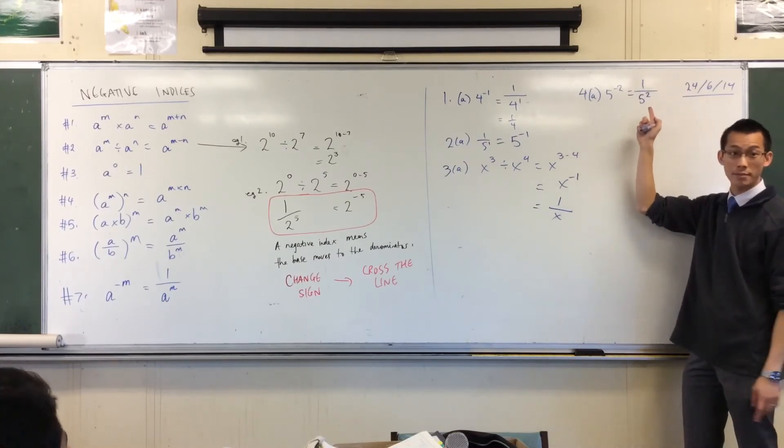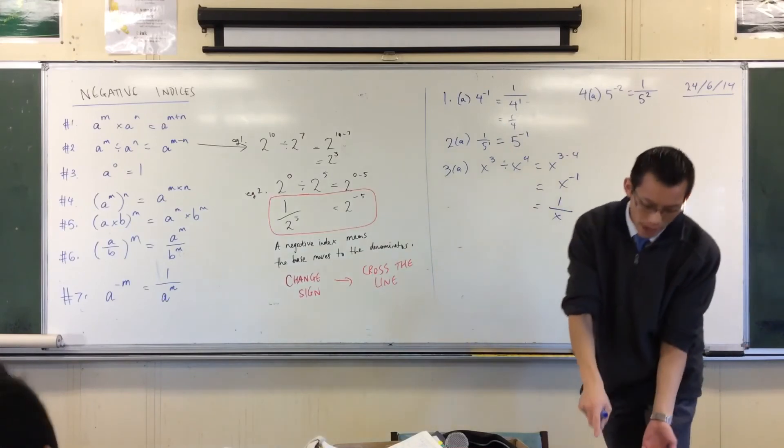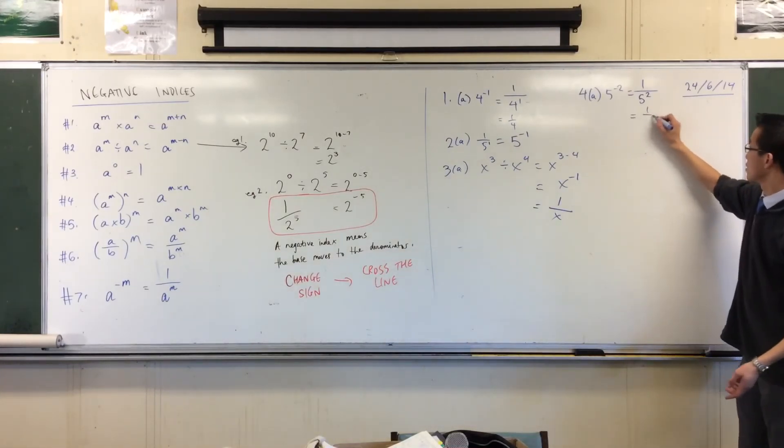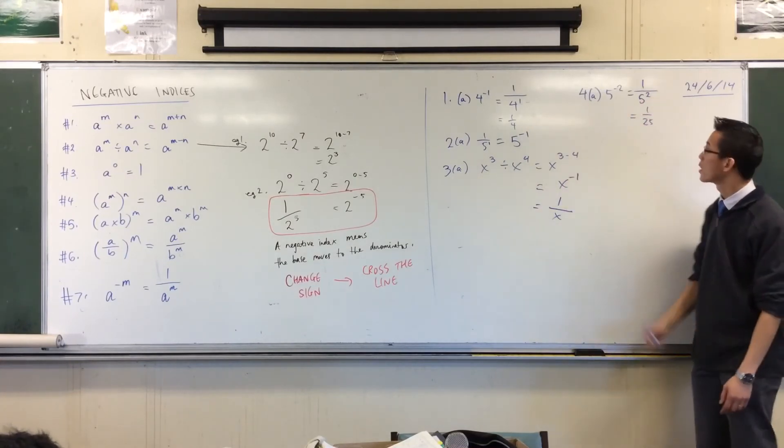I haven't got rid of the 2, I've just changed its sign. So that's 1 over 25. I mean, we want to get rid of the index. There you go, those would be the same number.